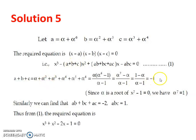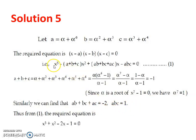Similarly, computing ab + bc + ac and simplifying, we get ab + bc + ac = −2. For abc, after multiplying the terms and substituting α⁷ = 1 wherever it appears, we get abc = 1. Substituting into the equation x³ − (a+b+c)x² + (ab+bc+ac)x − abc = 0 gives x³ + x² − 2x − 1 = 0.